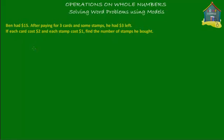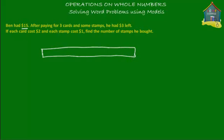Let's start with our model. Let's make a model for the amount of money that Ben had at first. Ben had $15, and this is our model that represents $15.